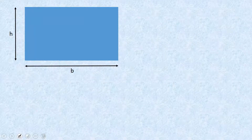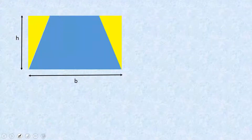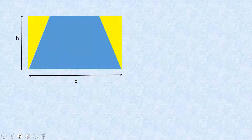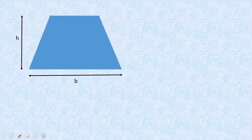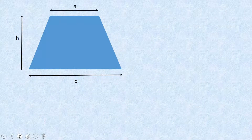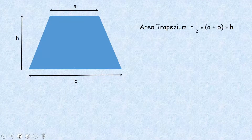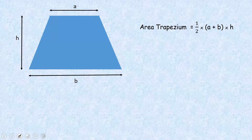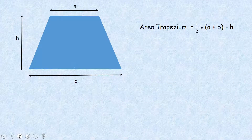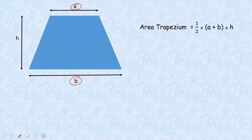Remembering that we know the area of a rectangle is base times height. Similarly, if I take off these triangles we've obviously lost some area, and now we're interested in what this length is here. So the formula — and it's important you copy this down because it's a little more complicated — is: the area of a trapezium is half of the top plus the bottom, all multiplied by the height.